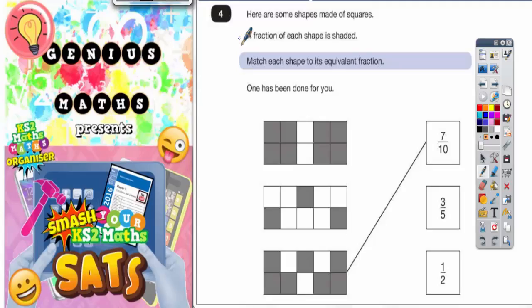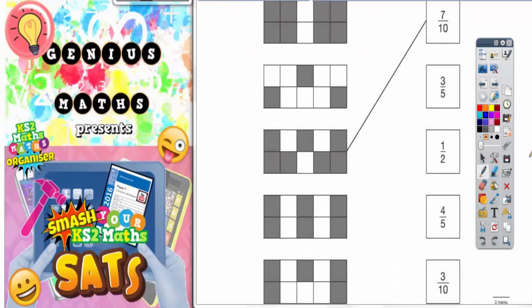Question number 4. Here are some shapes made of squares. A fraction of each shape is shaded. Match each shape to its equivalent fraction. One has been done for you. Well let's scroll down and take a look at all of the shapes. There we go.